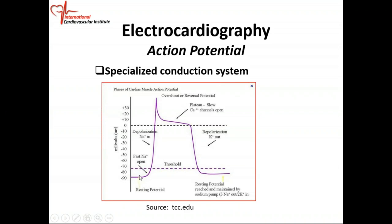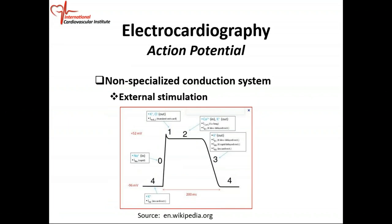The action potential looks something like this: when sodium rushes inside the cell, you get depolarization and the voltage increases. Then calcium moves out, creating a plateau phase. Then potassium moves out of the cell, bringing it back to the resting potential — that's repolarization. So in summary: depolarization when sodium rushes in, a plateau phase, then repolarization when potassium rushes out.